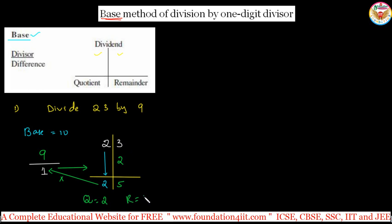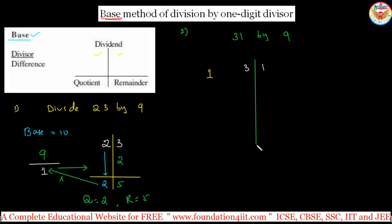Let us take one more example: 31 divided by 9. Immediately, base is 10, difference is 1. Take 31 — base 10 means 1 digit on the right side. First step: take this 3 as it is, down. Then 3 times the difference 1 is 3. Add: 1 plus 3 is 4. So 3 is the quotient and 4 is the remainder.